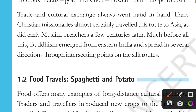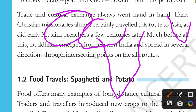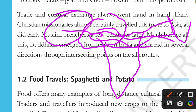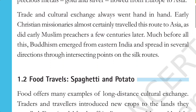Looking at the map — this is Europe, this is Africa, this is India, this is the Arab countries including Yemen. Christian missionaries traveled from Europe, and Muslim preachers spread through the Arab countries to connect these regions. Much before all this, Buddhism emerged from Eastern India and spread in several directions through intersecting points on the Silk Route. So through the Silk Routes, both trade and cultural exchanges — including the spread of Buddhism — were possible.